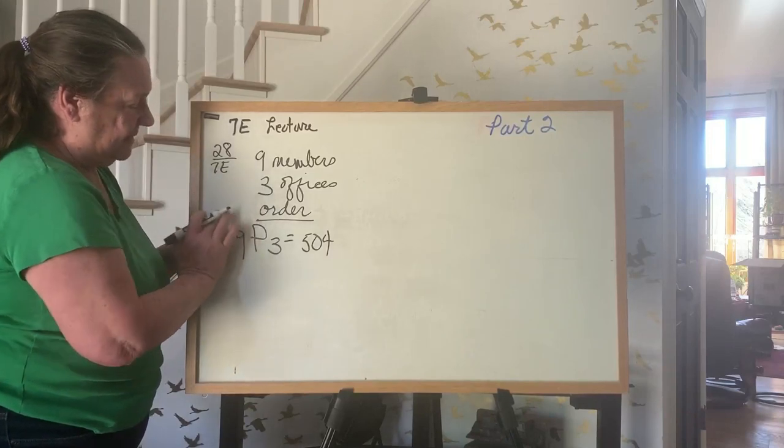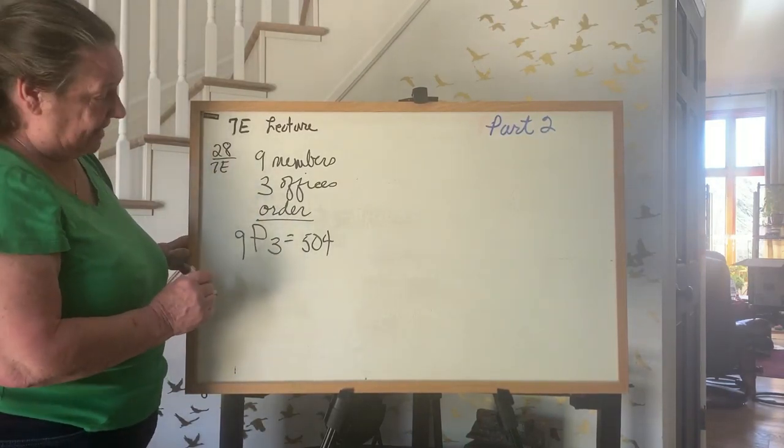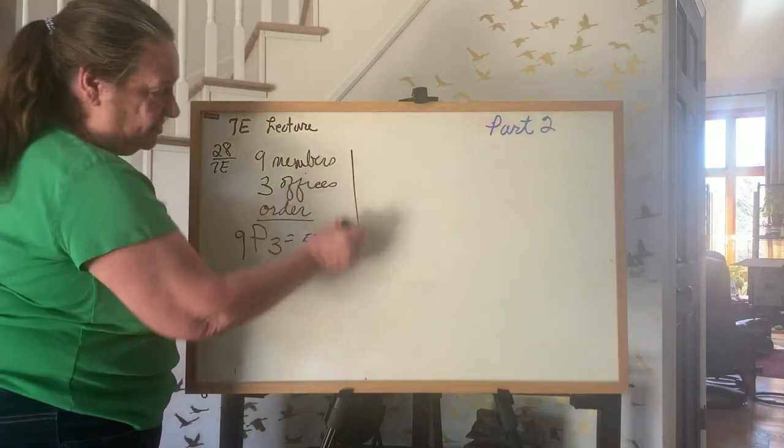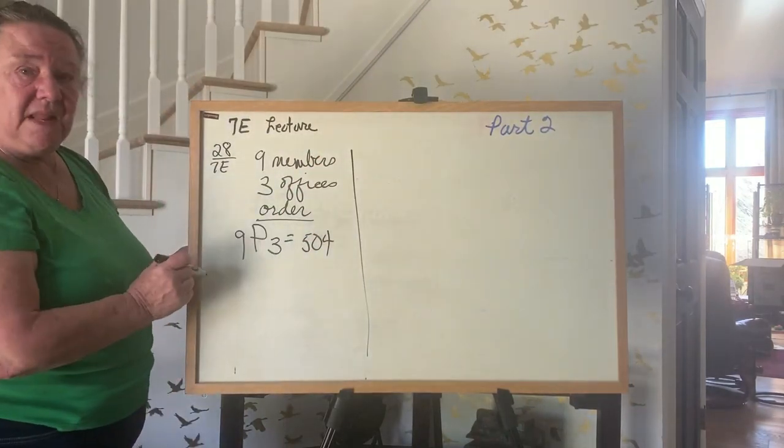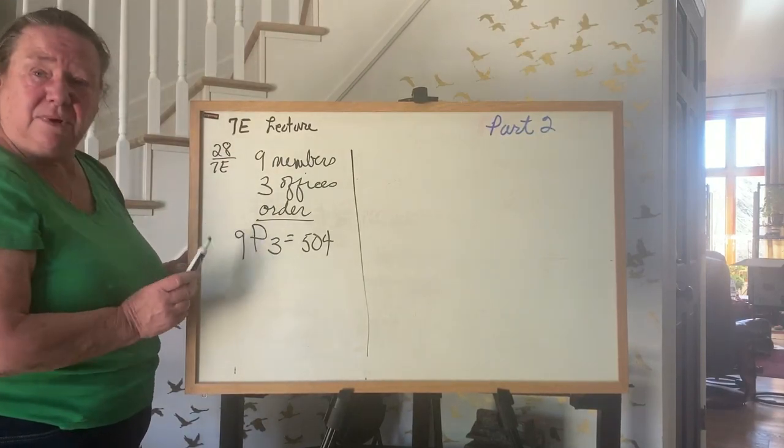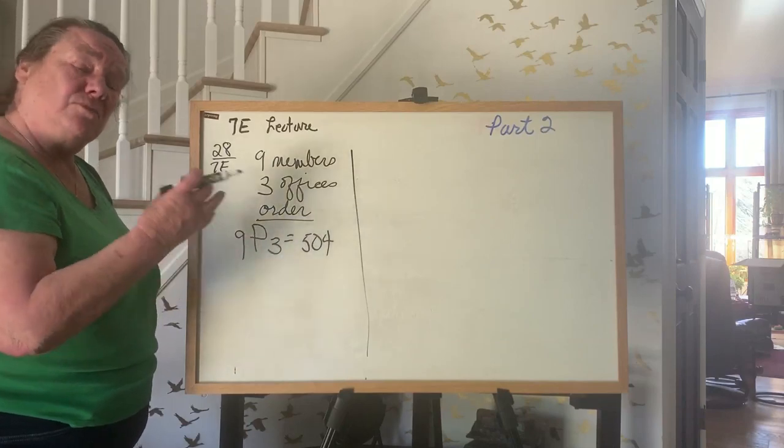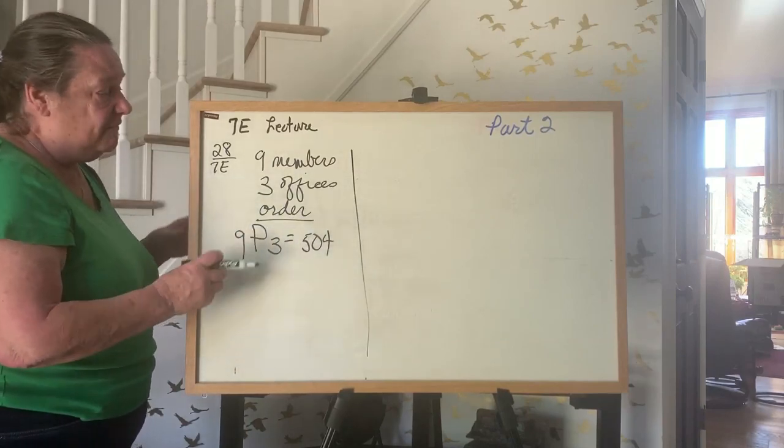And 504. Now I'm not going to work these out unless I can do it quickly because I don't want to take extra time. The most common mistake would be to say 9C3 and you don't get any credit for that because the whole thing is to recognize a permutation versus a combination.